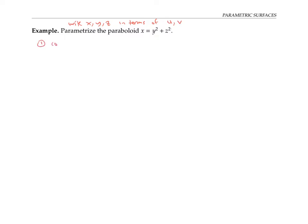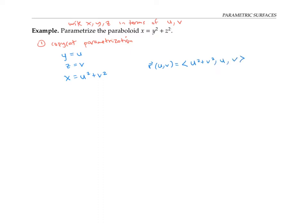One common way to do this is to use a copycat parameterization. That means we let two of our variables from x, y, and z just copy or equal u and v. In this example, it's natural to make y and z copy u and v, so I'll set y equal to u and z equal to v. That's because x is already solved for in terms of y and z. So now I can write x in terms of u and v as x equals u² + v². My parameterization r of u, v equals u² + v², u, v — where u² + v² is my x, u is my y, and v is my z.